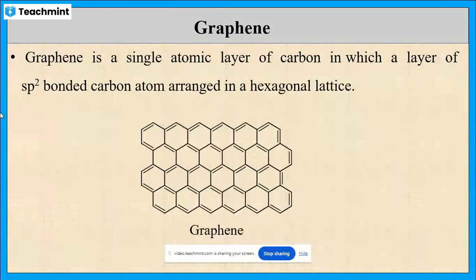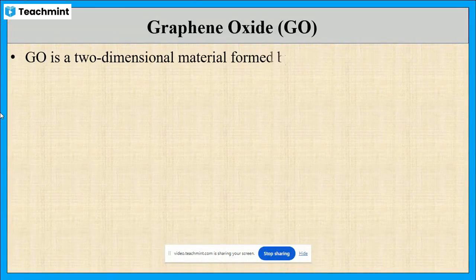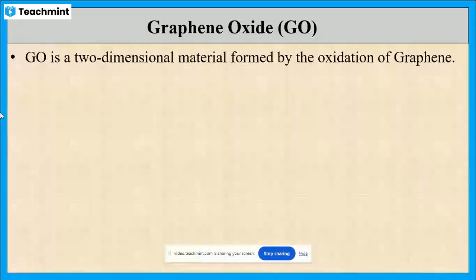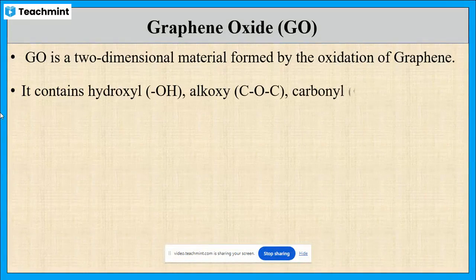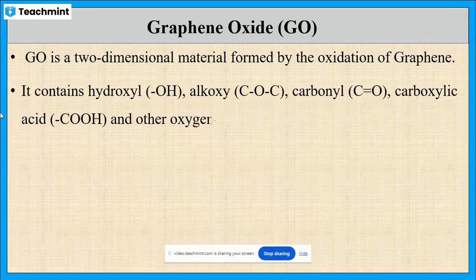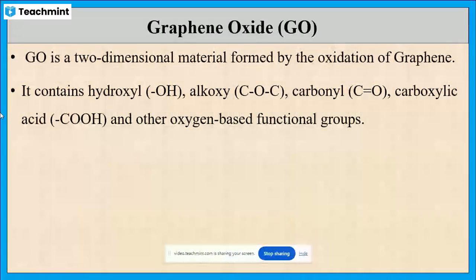Now let us see what is graphene oxide. It is a two-dimensional material obtained by the oxidation of graphene. It contains many functional groups such as hydroxyl group, carbonyl group, alkoxy group, carboxylic acid group, and other oxygen-based functional groups.